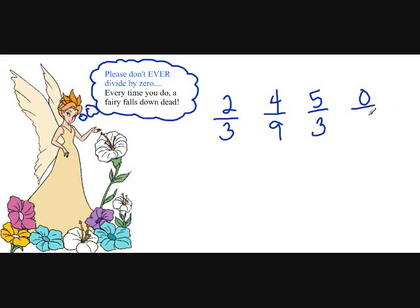You can even take 0 and divide it by a number. So 0 divided by 5, that would be equal to 0. But what you can never, never, never do is take a number and divide it by 0. Because every time you divide a number by 0, a fairy falls down dead.